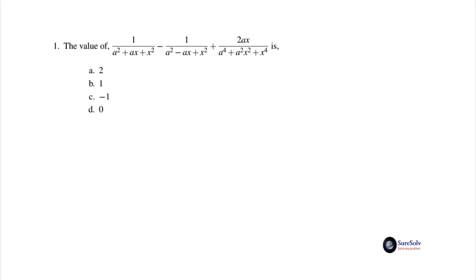This is an addition of three fractions. The fractions are algebraic but still the rules of addition of fractions will hold. To combine the terms we will have to combine the denominators. In the first two denominators we notice that a² and x² appear, but in the third denominator a⁴ and x⁴ appear.